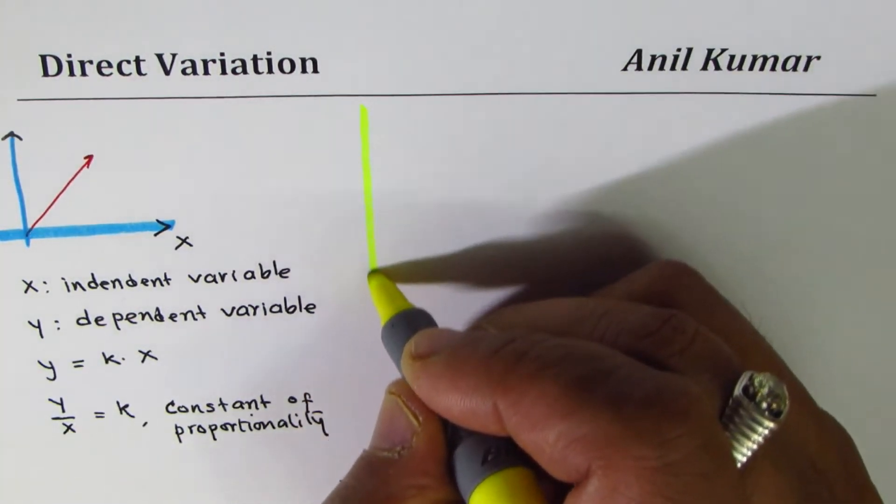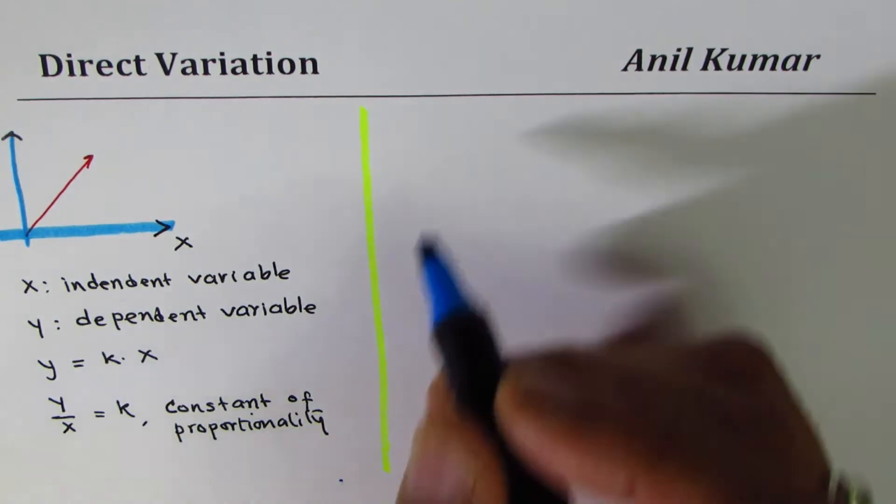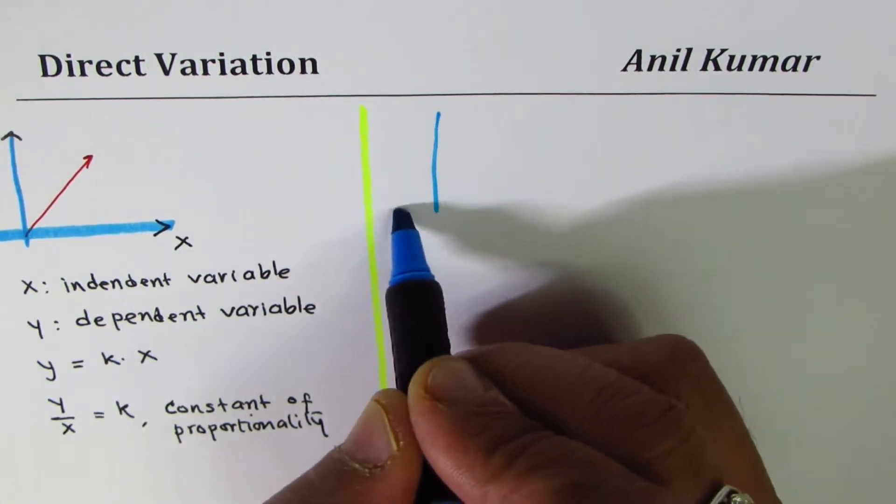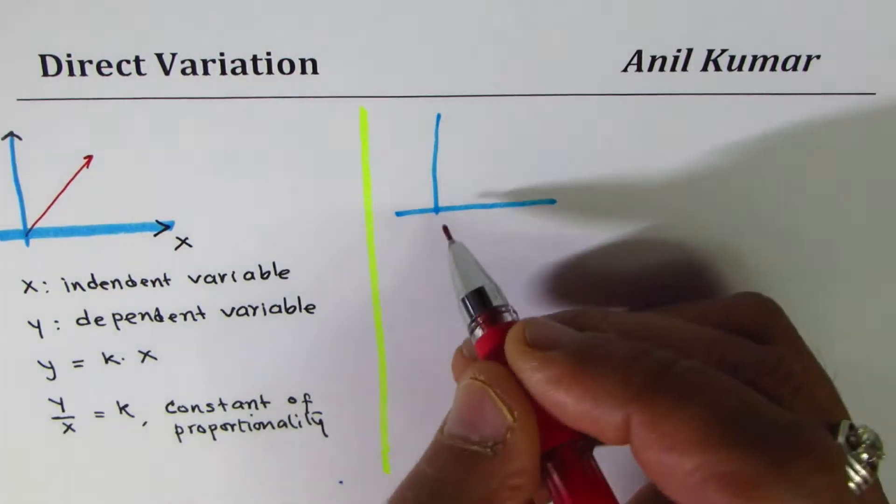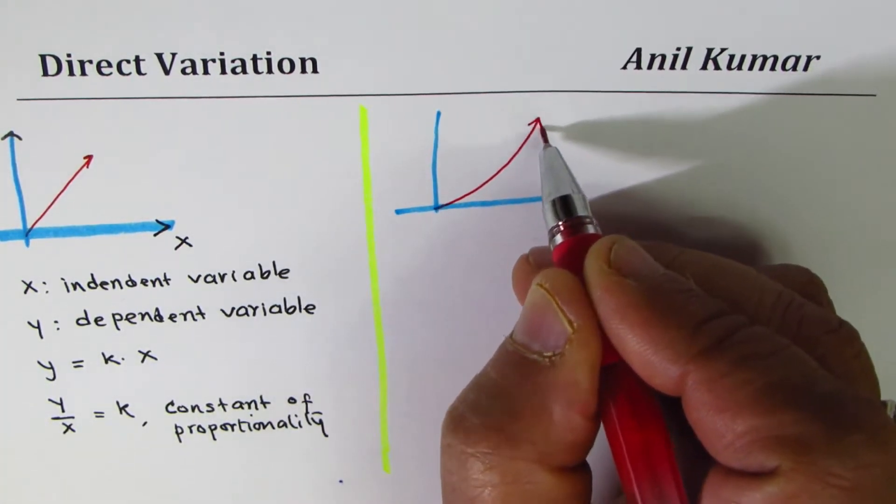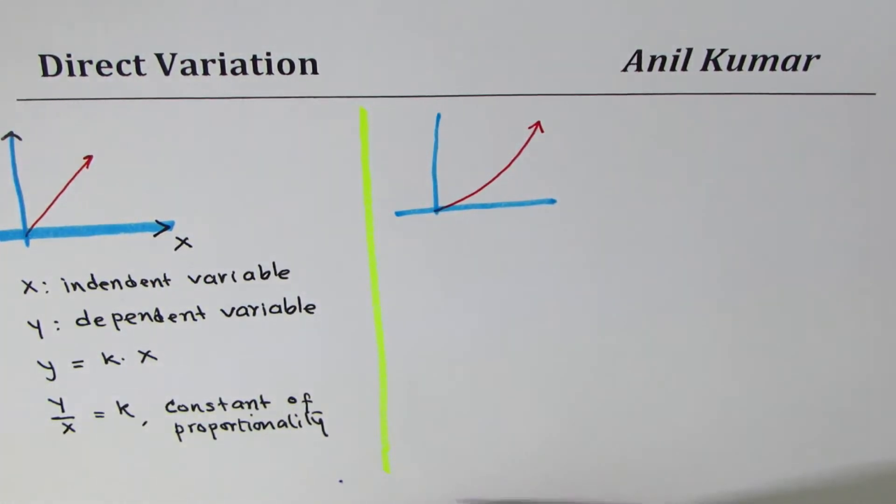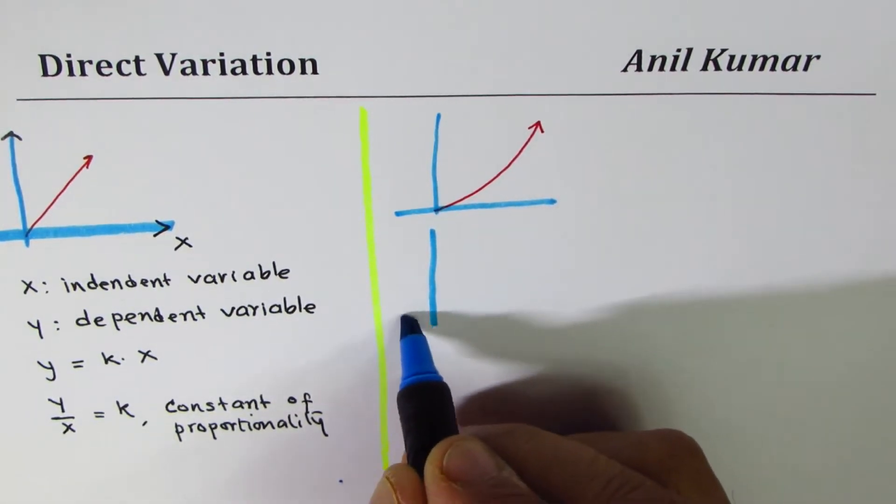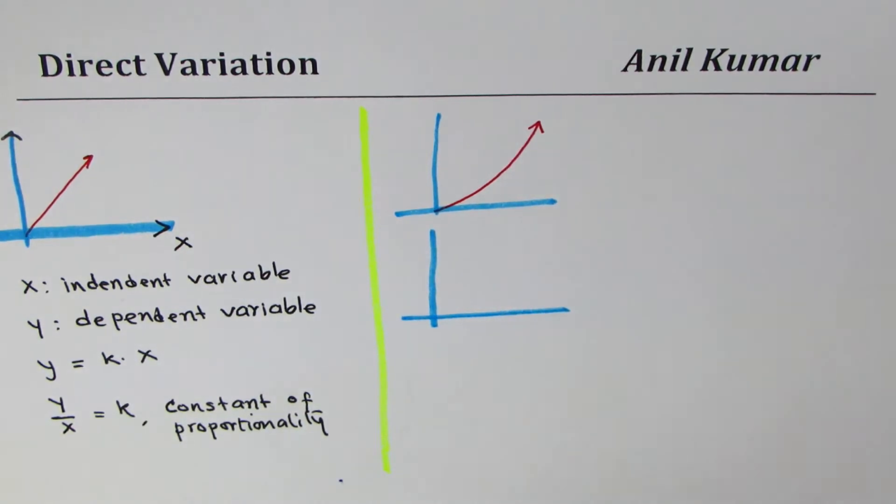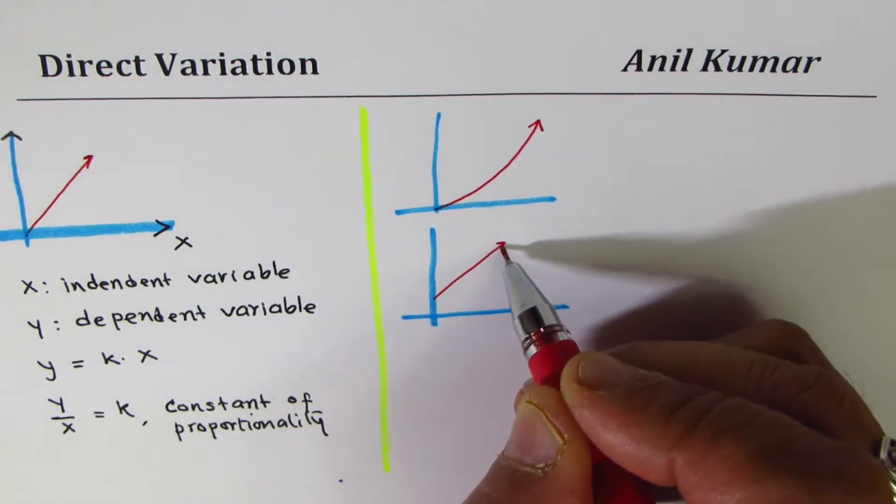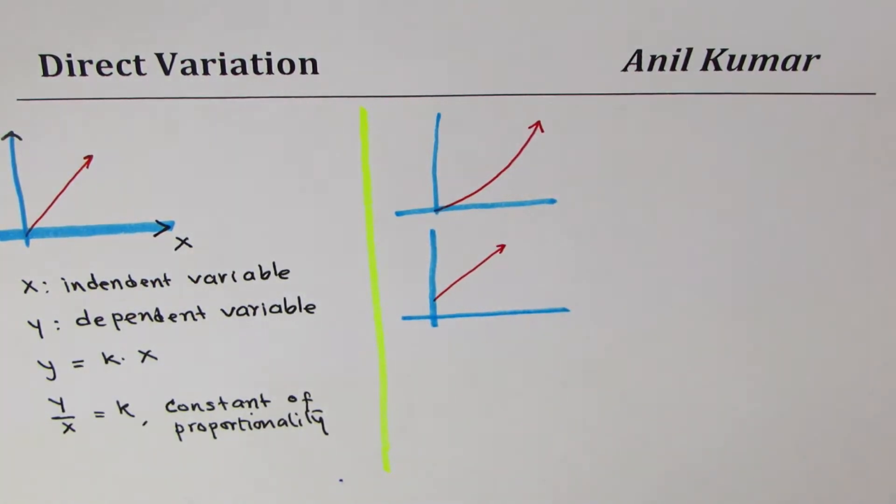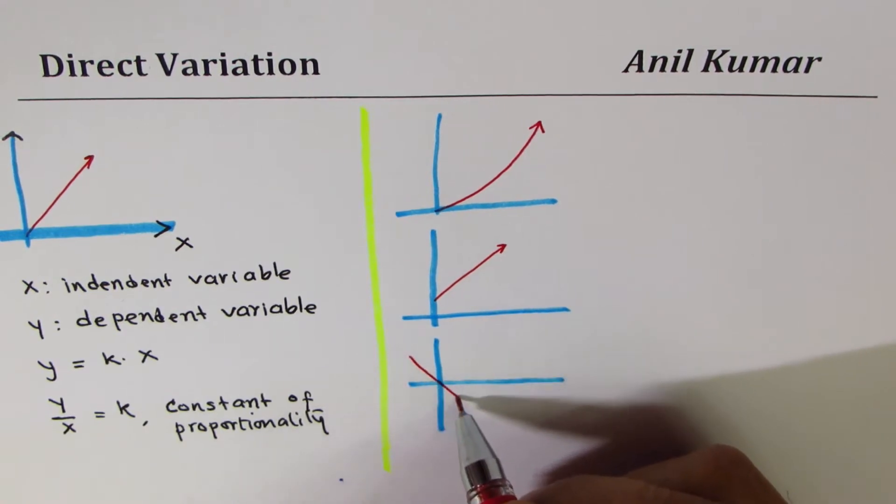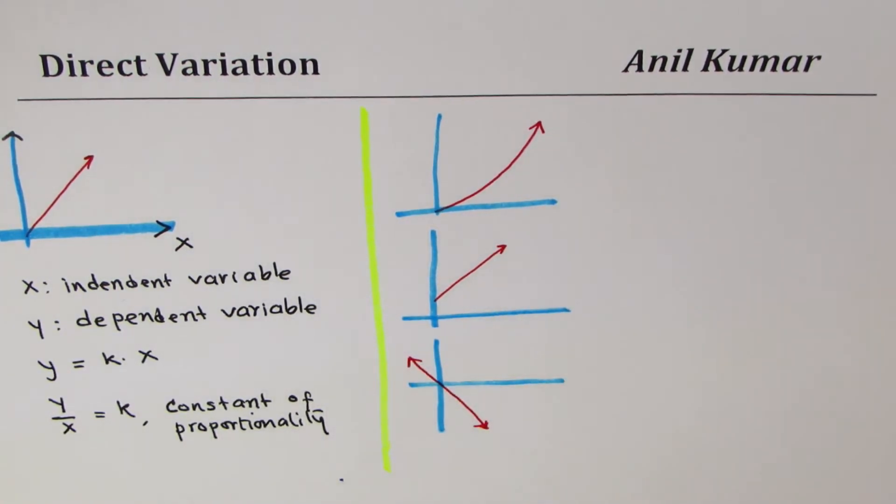Now let me give you some examples and check with you if you understood the particular definition. If I give you a graph which is kind of like this, will this be a direct variation? Or if I give you a graph which is like this, will that be a direct variation? Or if I give you a graph which is like this, will this be a direct variation?